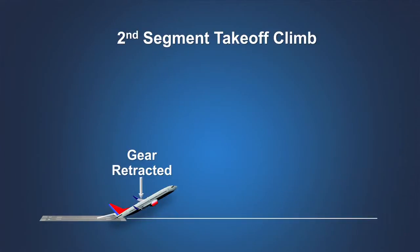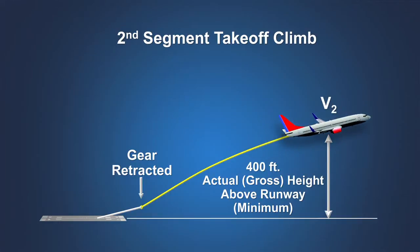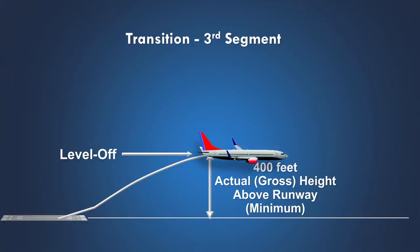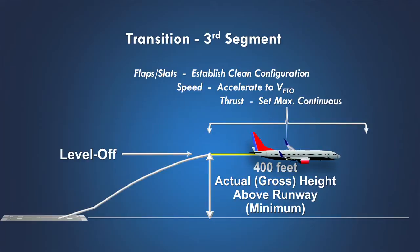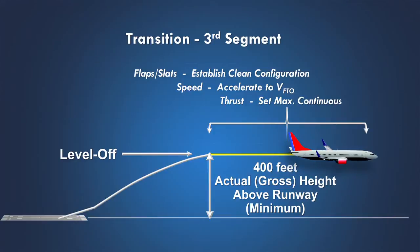The second segment must continue to a minimum height of 400 feet above the runway surface. No changes are allowed to the airplane's configuration or thrust while maintaining a speed not less than V2. The climb gradient during the second segment will gradually diminish due to thrust decrease resulting from increasing true airspeed and reduced air density as the airplane gains height. Therefore, the climb gradient capability will be greatest at the beginning of the second segment. Once the airplane has achieved at least 400 feet above the runway surface, the transition segment may begin. During this level flight segment, the airplane is accelerated to flap and slat retraction speed and then to the final takeoff airspeed.